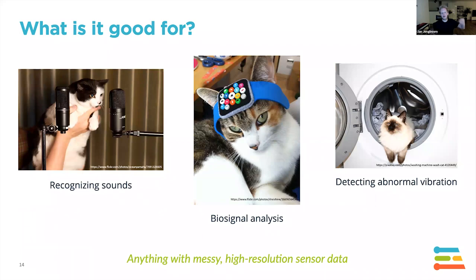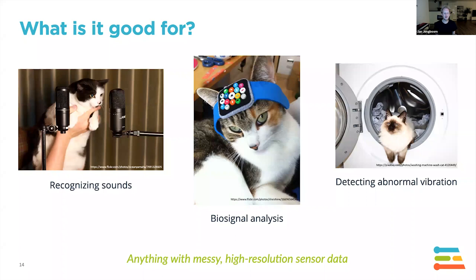Machine learning is great for messy, high-resolution sensor data you can't easily reason about in Excel. If you can plot it and deduce the formula, do that — don't go into the ML world. But for recognizing sounds, biosignal analysis (like from sensors on your wrist, like the Oura ring), abnormal vibration patterns, or visual detection — that's perfectly applicable to ML.